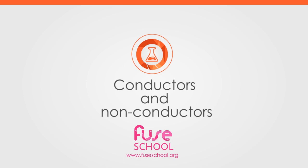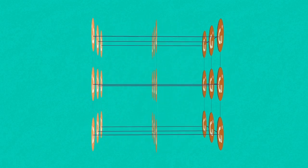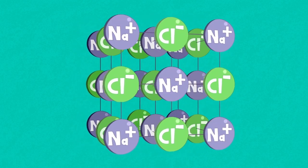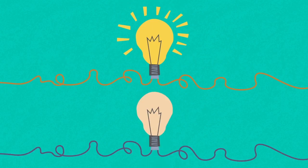In this video we're going to learn about the differences between chemical structures of a conductor and a non-conductor. This will be used to explain why different solids do and do not conduct electricity.